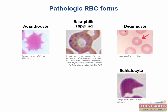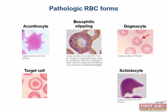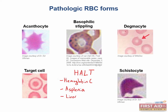Another important pathologic RBC variant is the target cell. Due to an increase in surface area to volume ratio, the normal area of central pallor is filled in with extra membrane, making the RBCs look like targets. Diseases in which you'd see target cells can be remembered with the mnemonic HALT when you reach the target, standing for hemoglobin C disease, asplenia, liver disease, and thalassemia.